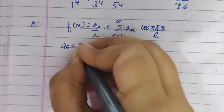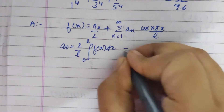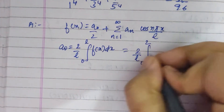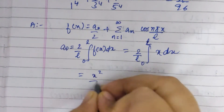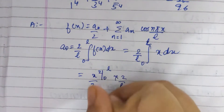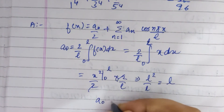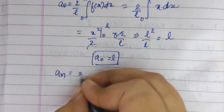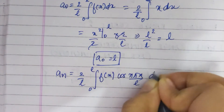We have a naught equal to 2 by l from 0 to l of f(x) dx, that is 2 by l from 0 to l of x dx. Integrating, we get x squared by 2 from 0 to l, multiplied by 2 by l. The 2s cancel, and on substituting we have l squared by l, giving a naught equals l. Now we find a_n: a_n equals 2 by l from 0 to l of f(x) cos(n pi x by l) dx.